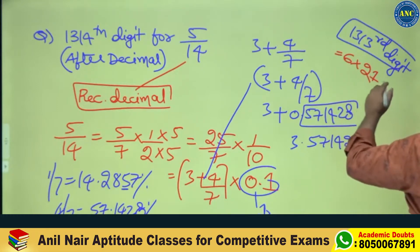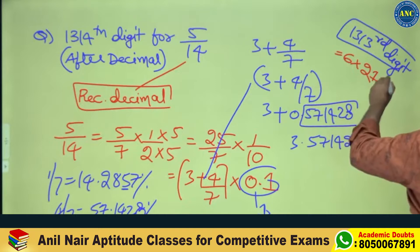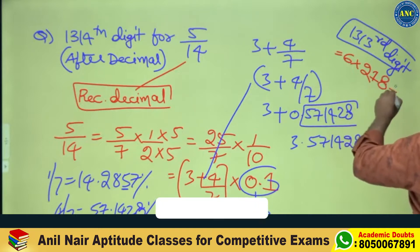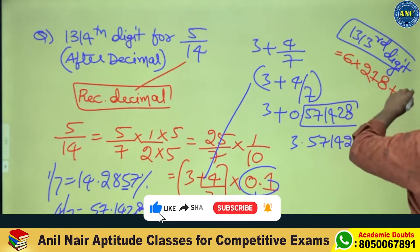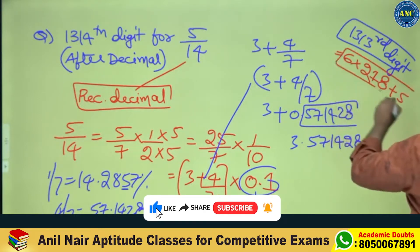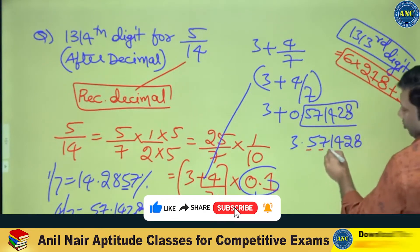6 digits get repeated. So 1313 divided by 6: 6 into 218 is 1308, remainder 5. So the 5th digit is required. 6 times 218 is 1308, and 1313 minus 1308 is 5 — the 5th digit I require.